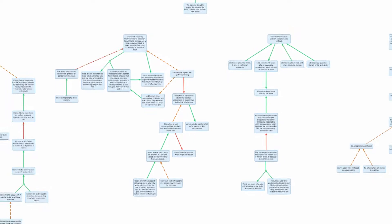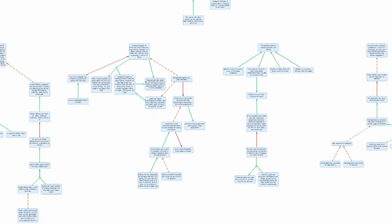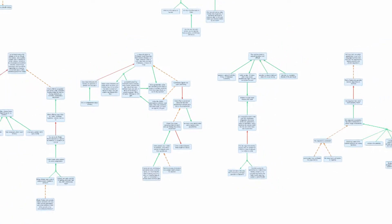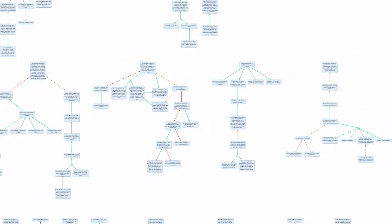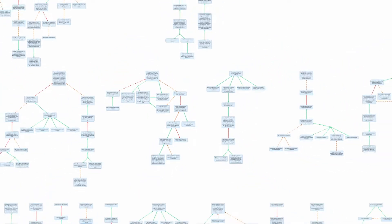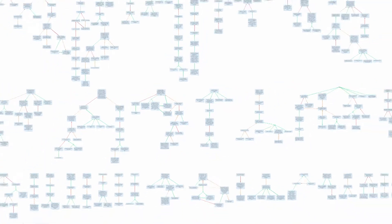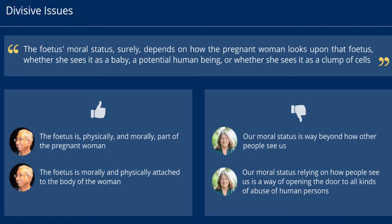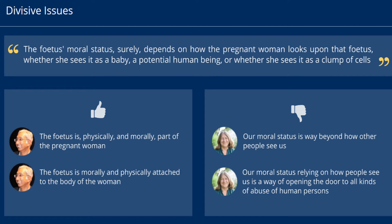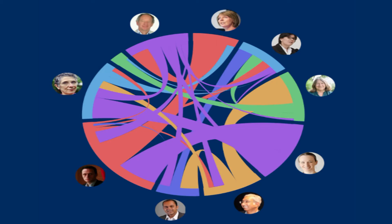But once we've got that map, there's a lot that we can do with it. You can start to see where the most divisive issues are. You can start to understand what were the most central themes. You can start to get a sense of how the different participants engaged with the debate, what their opinions were and so on.